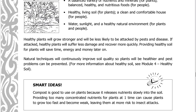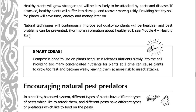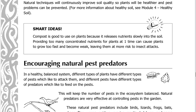Healthy plants will grow stronger and will be less likely to be attacked by pests and disease. If attacked, healthy plants will suffer less damage and recover more quickly. Providing healthy soil for plants will save time, energy, and money later on. Natural techniques will continuously improve soil quality so plants will be healthier and pest problems can be prevented. For more information about healthy soil, see Module 4, Healthy Soil. Compost is good to use on plants because it releases nutrients slowly into the soil. Providing too many concentrated nutrients for plants at one time can cause plants to grow too fast and become weak, leaving them at more risk to insect attacks.